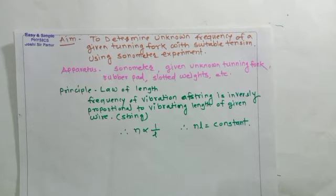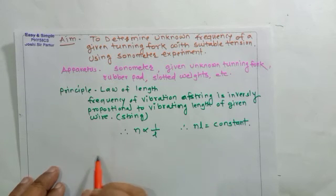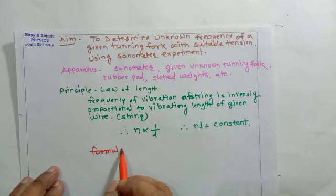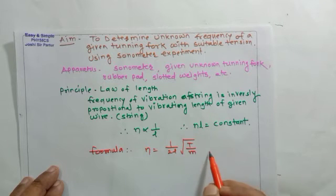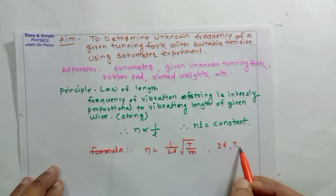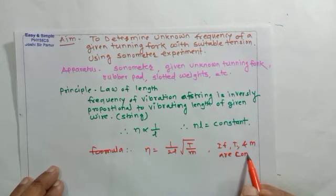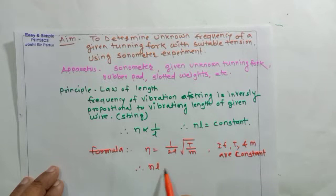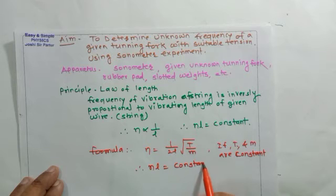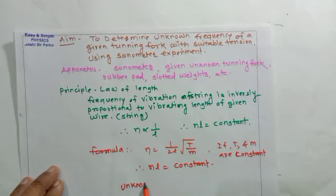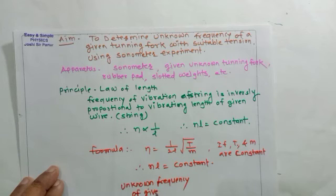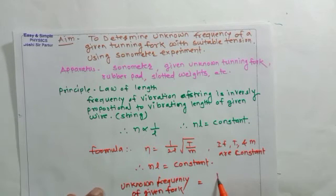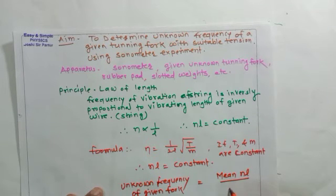See here, the formula for this experiment, we can use a formula: frequency is equal to 1 upon 2L square root of T upon M. If T and M are constant, therefore NL is constant. So unknown frequency of given fork is equal to mean NL upon L dash.